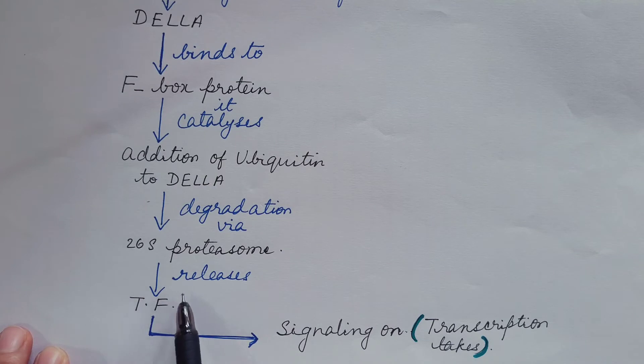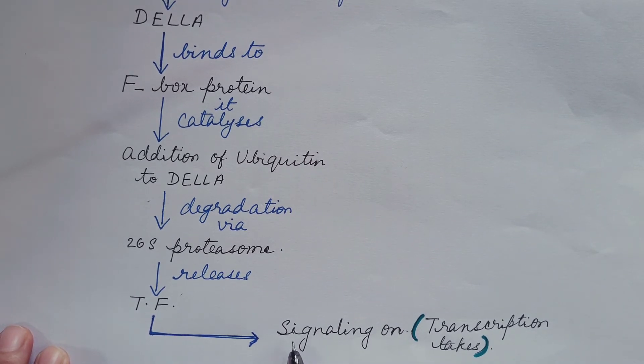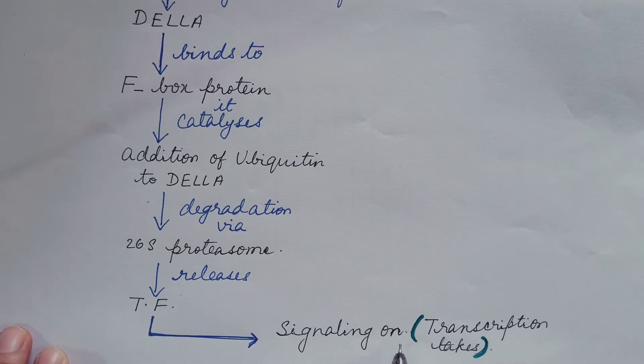This ubiquitination of DELLA enables degradation of DELLA protein via 26S proteasome. Due to the degradation of DELLA protein, transcription factor is free or it is released. Now this transcription factor is able to transcribe genes or we can say that signaling is on.